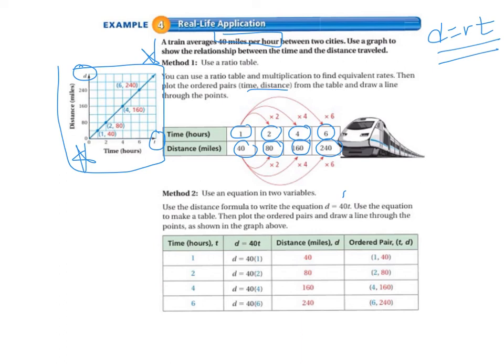So we use the same amounts of time: 1, 2, 4, and 6. Our equation is d equals 40t. And so if we go for one hour, it's d equals 40 times 1, so that gives us a distance of 40 miles. And our ordered pair is (1, 40).